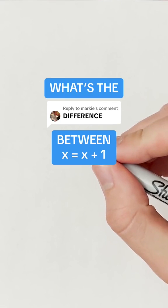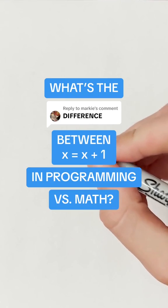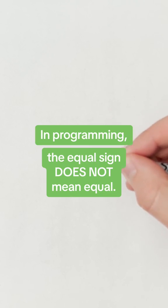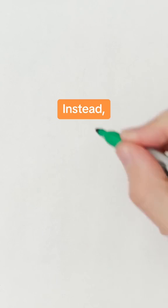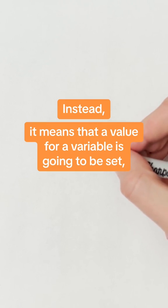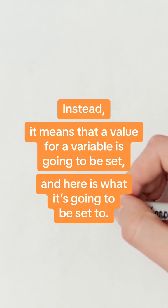What's the difference between x equals x plus 1 in programming versus math? In programming, the equals sign does not mean equal. Instead, it means that a value for a variable is going to be set, and here's what it's going to be set to.